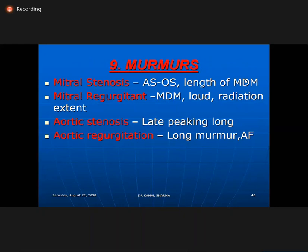Regarding murmur severity: in mitral stenosis, the A2-OS interval is a very important parameter for severity. Length of the mid-diastolic murmur is also proportionate to severity — severe MS will have a long murmur with presystolic accentuation, especially in patients without atrial fibrillation. In MR, loudness and radiation with extent matter: louder the murmur, the more severe the lesion. The length of the MR murmur is always long because there is a trans-systolic gradient throughout.